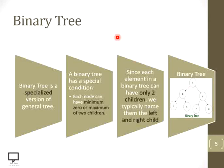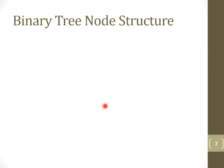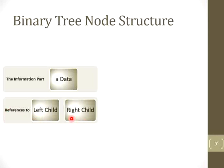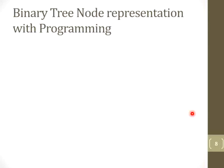Now let's move forward to the next slide where I am explaining the representation of a binary tree and its node. To represent a binary tree we follow a node structure where every node is divided into: first, the information part, which holds the data of the node; and it also holds the reference to its left child and to its right child. So the node structure is divided into three parts.